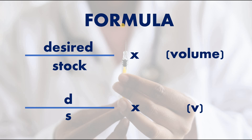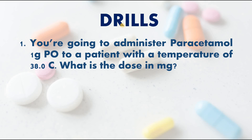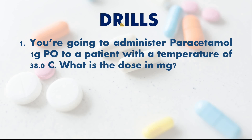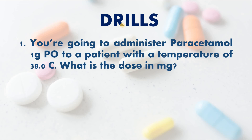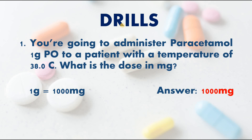Practice question number one: you're going to administer paracetamol 1 gram orally to a patient with a temperature of 38 degrees Celsius. What's the dose in milligrams? Paracetamol is a medication for both pain and fever — known as analgesia and antipyretic respectively. You have 1 gram, and since 1 gram equals 1,000 milligrams, the answer is 1,000 milligrams.